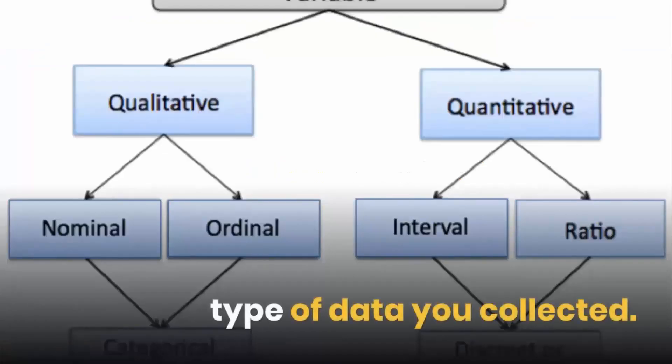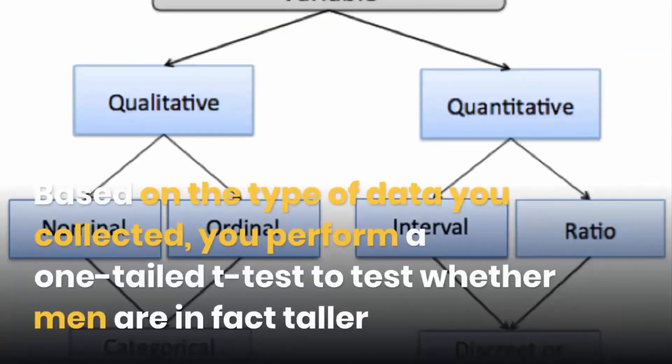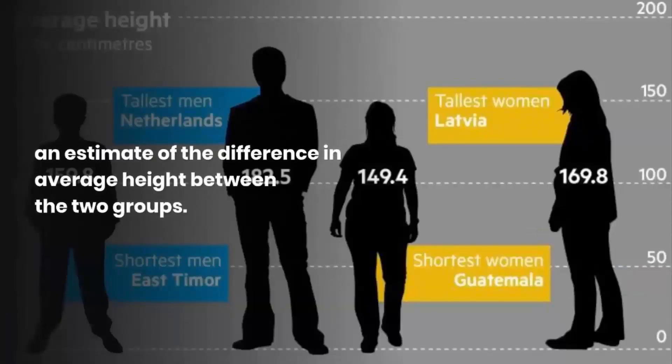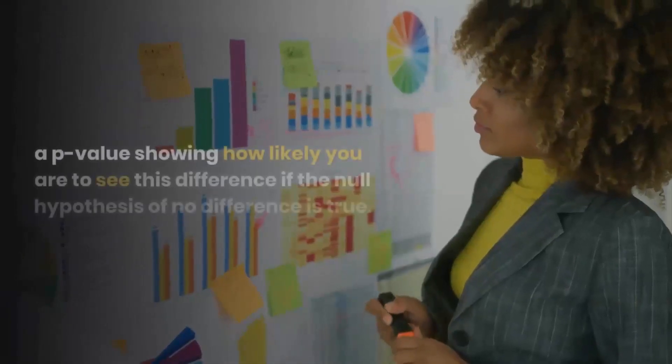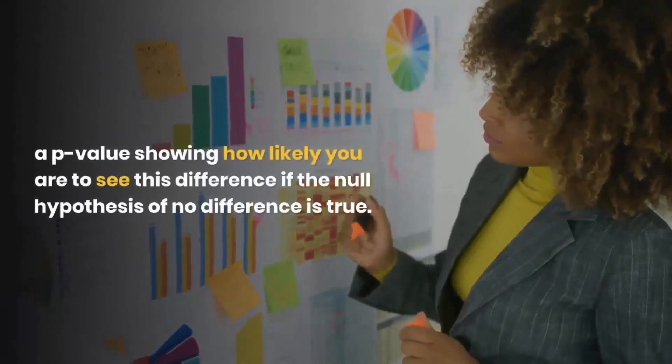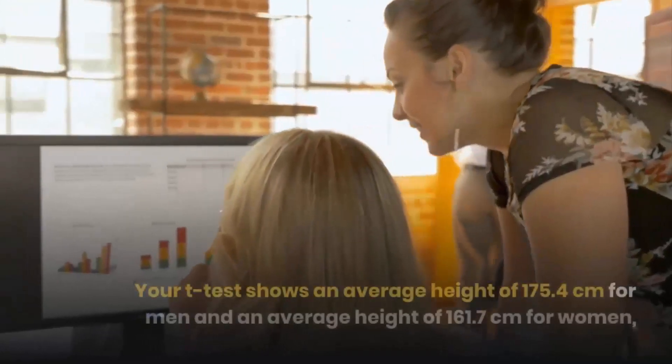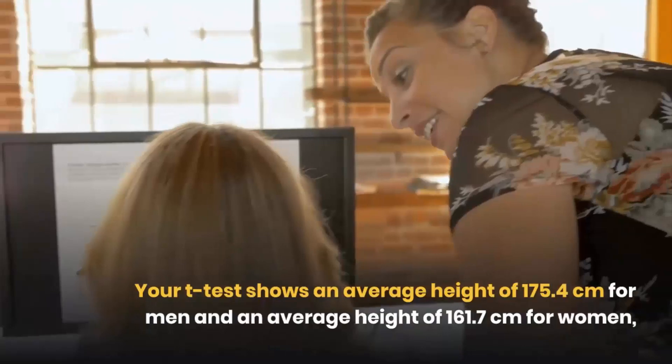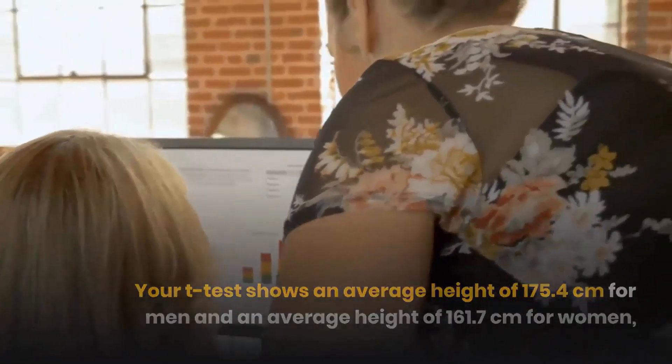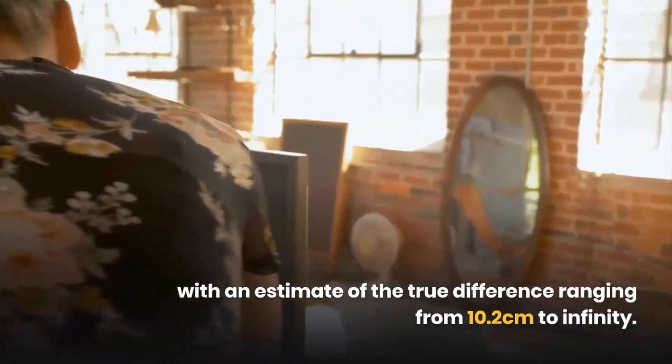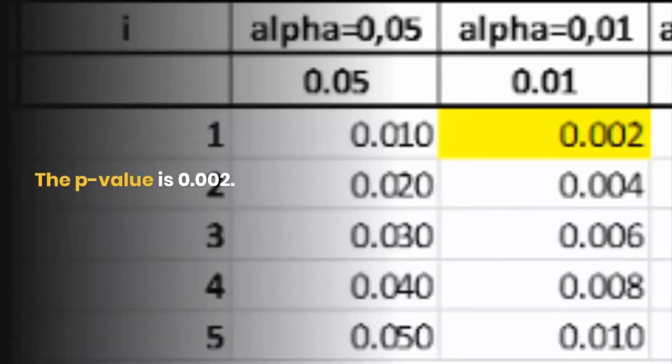Based on the type of data you collected, you perform a one-tailed t-test to test whether men are in fact taller than women. This test gives you an estimate of the difference in average height between the two groups and a p-value showing how likely you are to see this difference if the null hypothesis of no difference is true. Your t-test shows an average height of 175.4 cm for men and 161.7 cm for women, with an estimate of the true difference ranging from 10.2 cm to infinity. The p-value is 0.